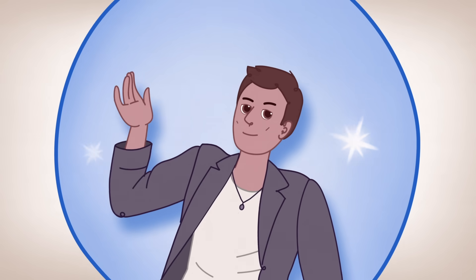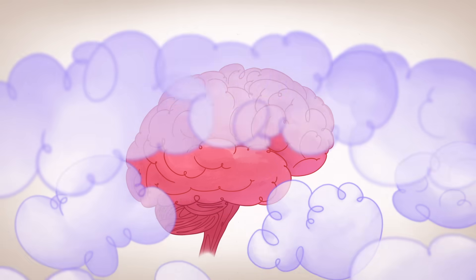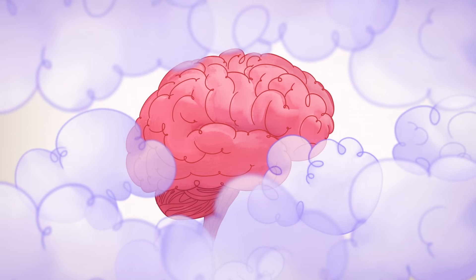At this first stage, it may be hard to see any faults in your new perfect partner. This haze is thanks to love's influence on higher cortical brain regions.